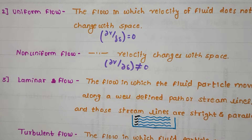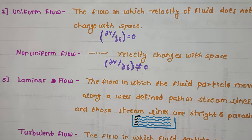Non-uniform flow is the flow in which the velocity of the fluid changes with respect to space. The particle's specific velocity keeps changing with respect to distance. We can represent it as ∂v/∂s ≠ constant. That is all about uniform flow and non-uniform flow.